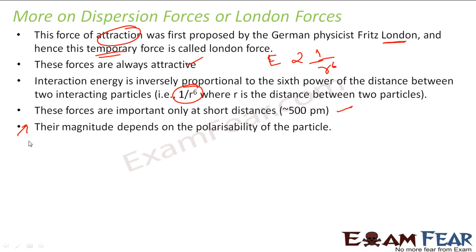These forces depend on the polarizability of the particle — how easily an atom in a molecule can be polarized. If an oxygen molecule is easily polarizable, it will have a strong dispersion force. If another molecule is not easily polarizable, it will have a weak dispersion force. So the magnitude of the London force depends on the polarizability of the particle.